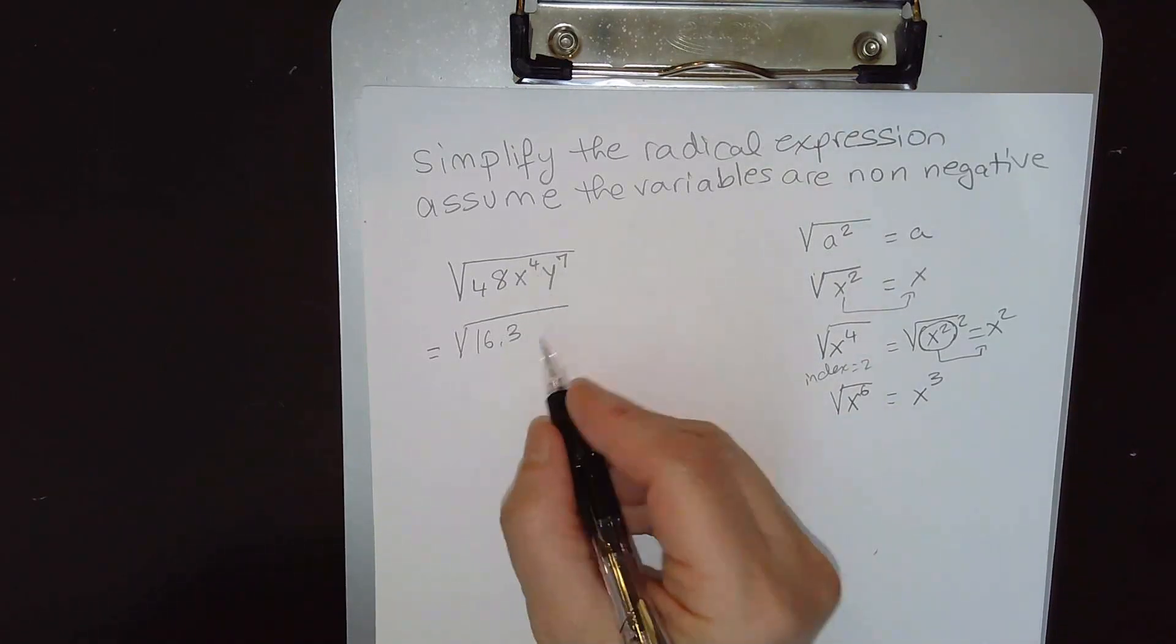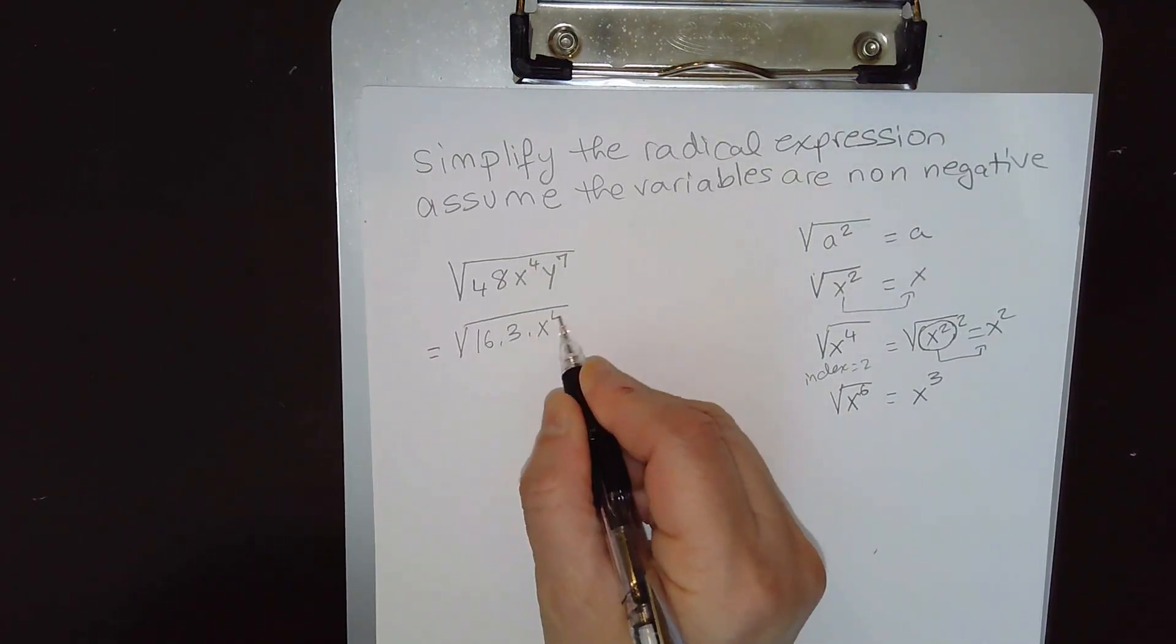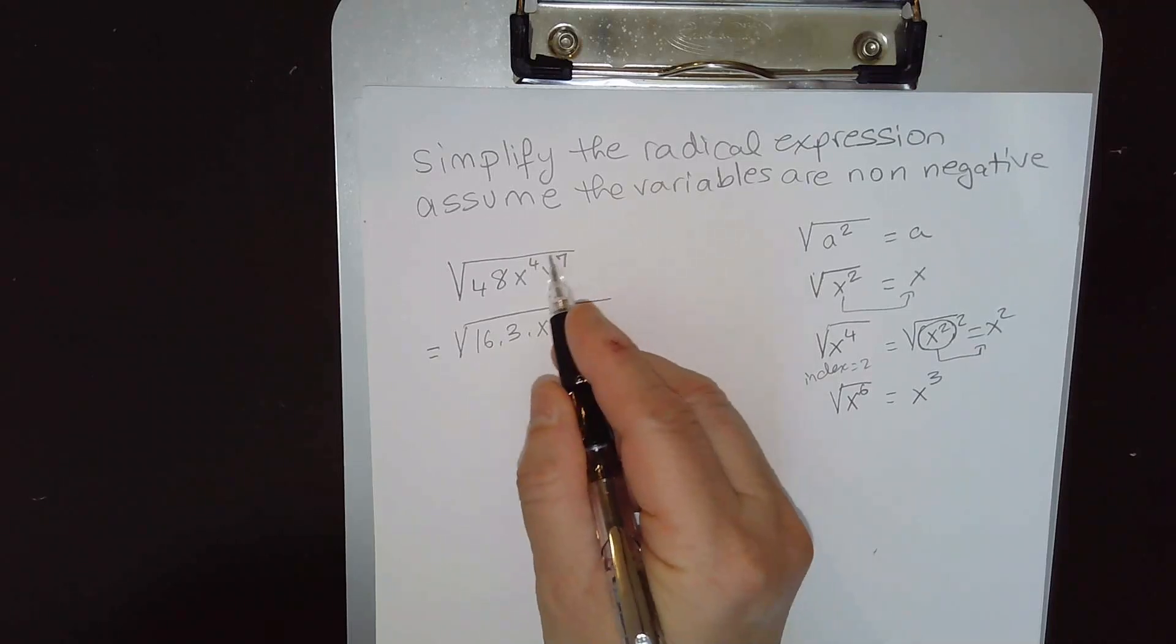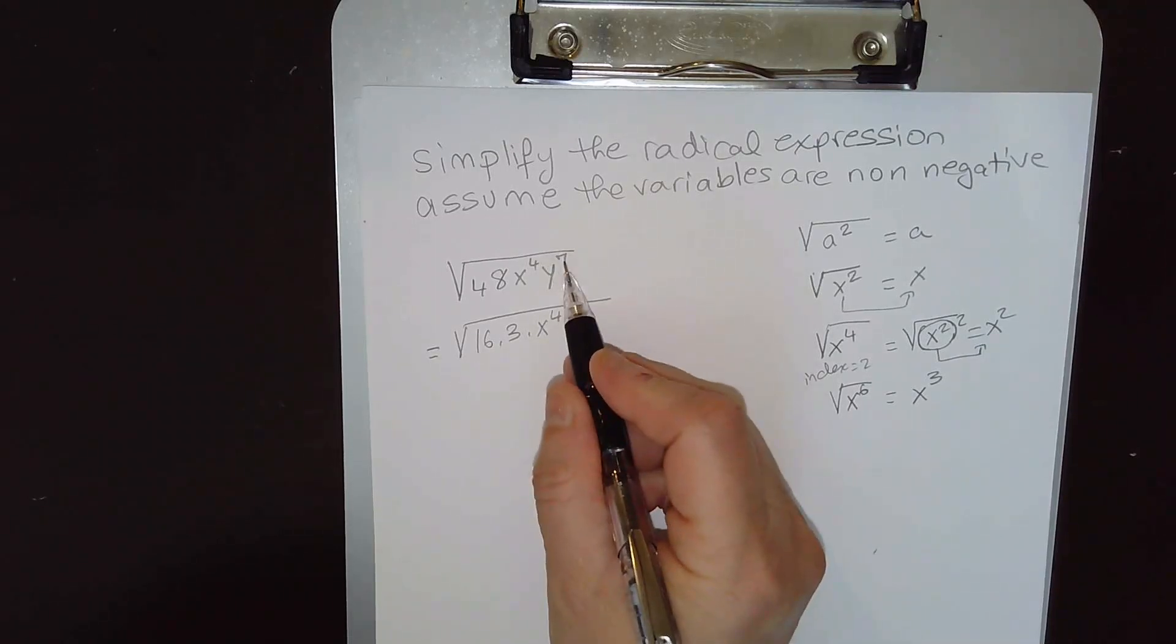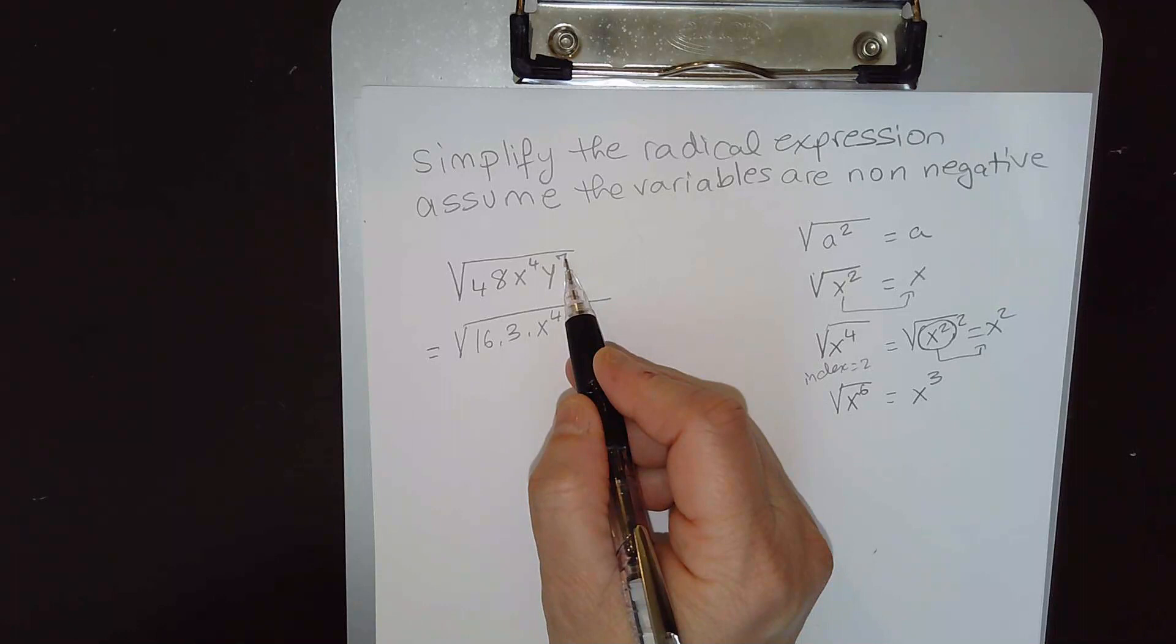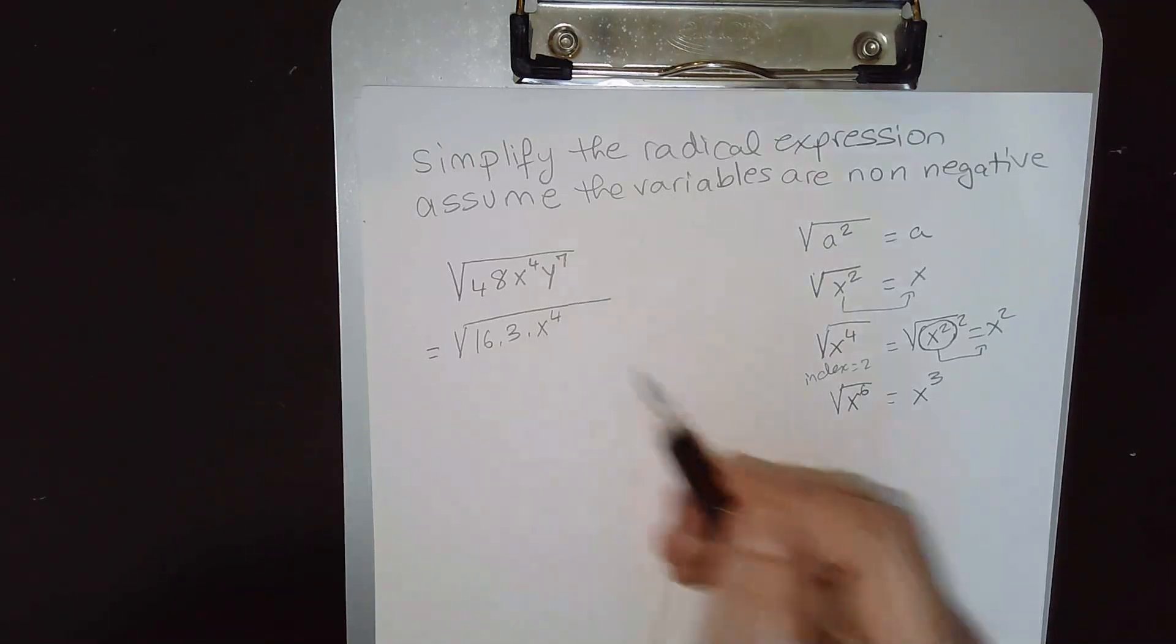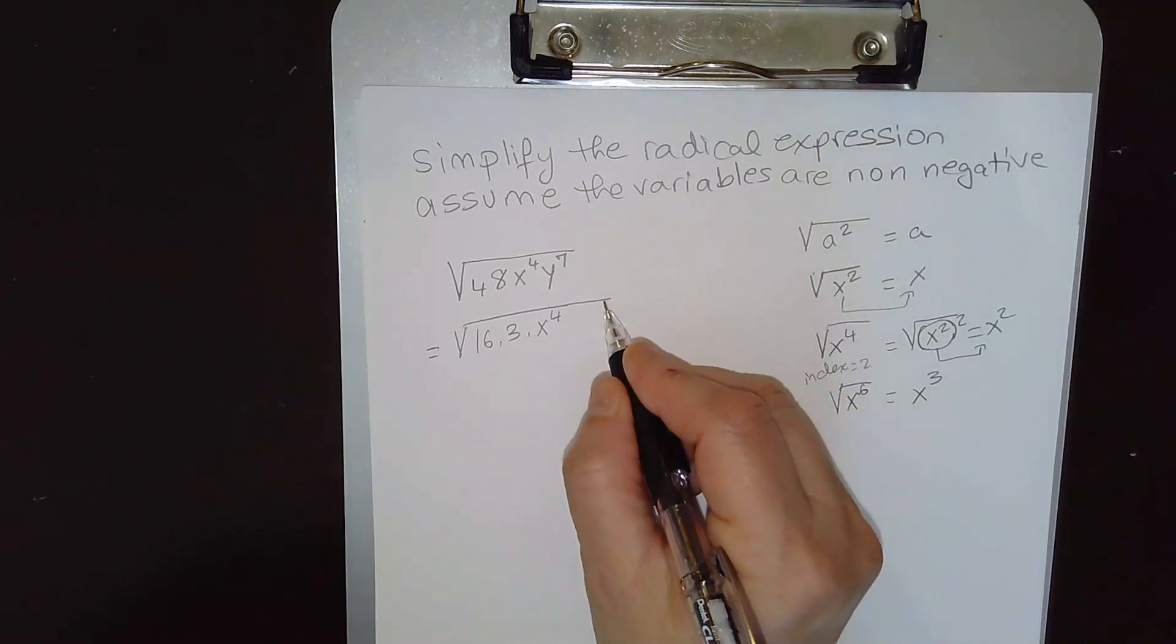And x⁴ is a perfect square, but we have an issue with y⁷. y⁷, the power of 7, that's not a perfect square. Because the power is odd, it does not come out completely.